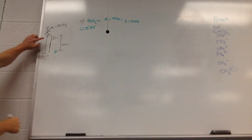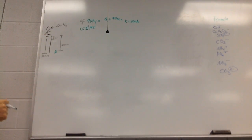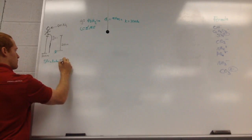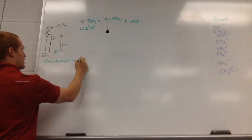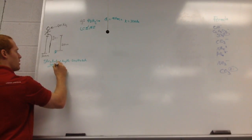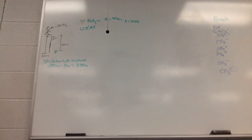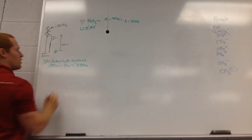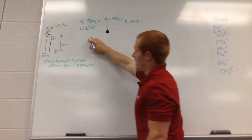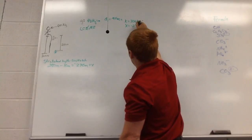Notice how the bungee cord started at 10 meters and stretches to 280 meters. We need to find the displacement — that stretch. We take the stretched length minus the unstretched length: 280 meters minus 10 meters gives us x equals 270 meters. Since it's going downward, x is negative, so x equals negative 270 meters.